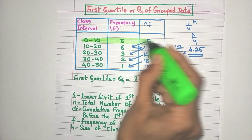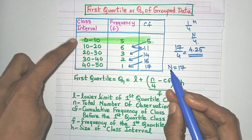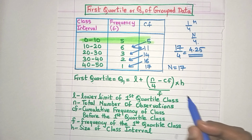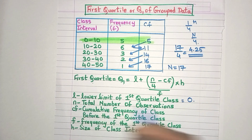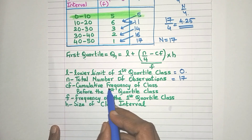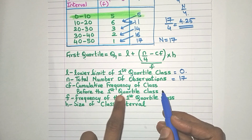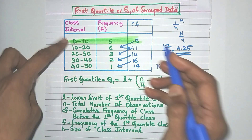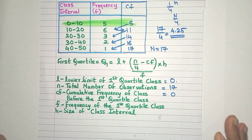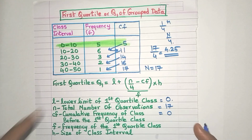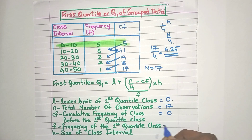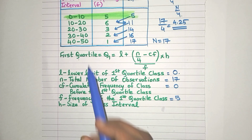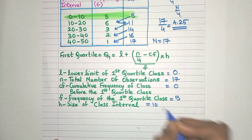This is the first quartile class — let me highlight it. Once we know the first quartile class we can find the values of the formula variables. L is the lower limit of the first quartile class, so L is 0. n is the total number of observations, which is 17. CF is the cumulative frequency of the class before the first quartile class — since there is no previous class, we take CF to be 0. f is the frequency of the first quartile class, which is 5.